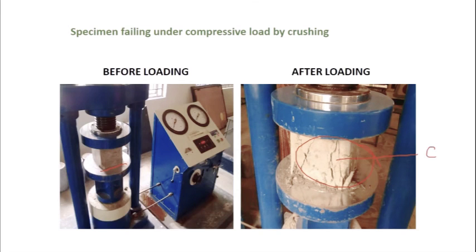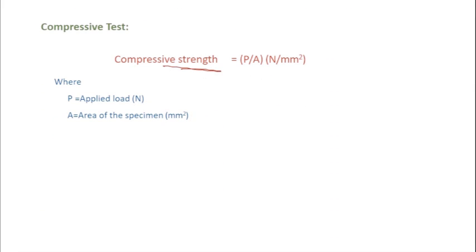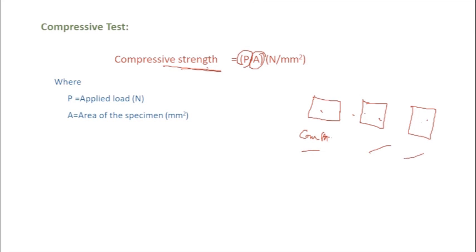All three specimens must be tested in the same manner. At the time of failure, this is called crushing. The compressive strength is the force at which it failed divided by its area. Since there are three specimens, you get three values and take the average. The concrete must be properly mixed and compacted in the mold so that the three cubes are similar to each other.